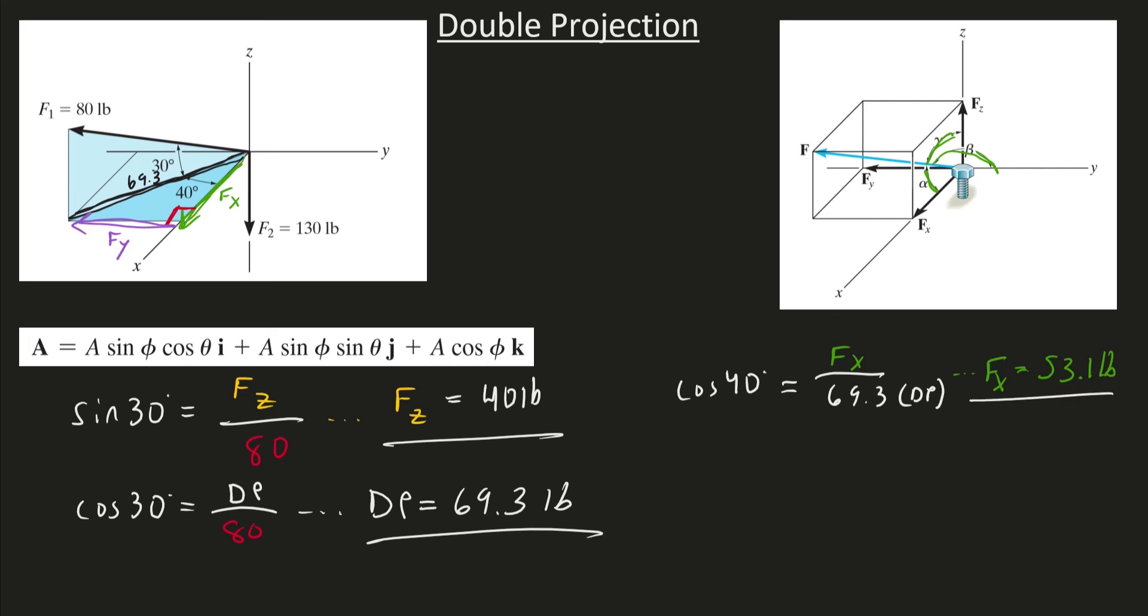And to find the Y, you sign. The sine of that 40 degrees is equal to the opposite of that 40, which is the Y component in this case, over that hypotenuse of that double projection. And we'll get 44.5 pounds there.